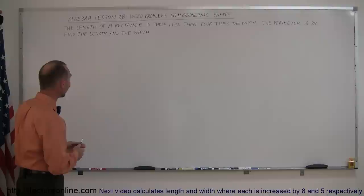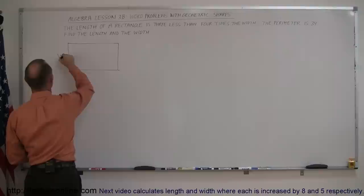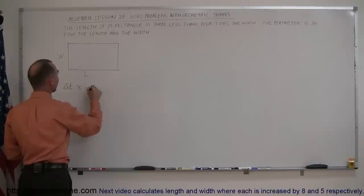So first, it might be a good idea to draw a little rectangle. Here's the width. Here's the length. So we want to just use one variable x. We like to use let x be defined as the smallest of the two, and so we're going to let x equal the width of the rectangle.